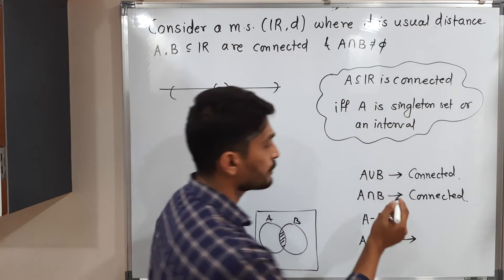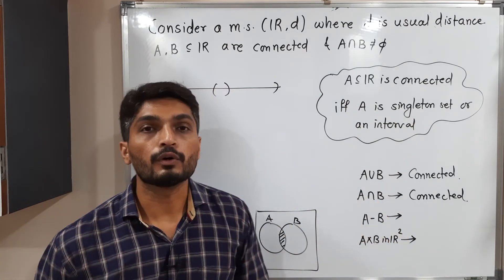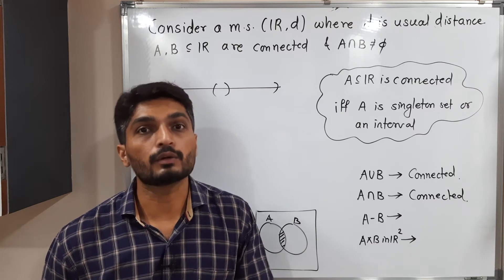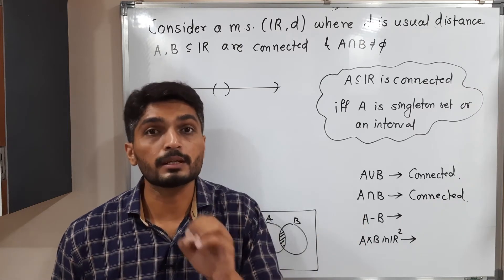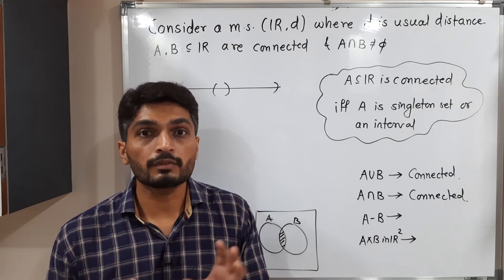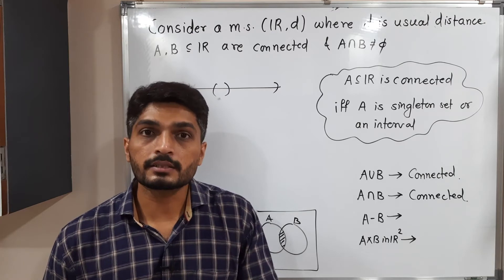In previous videos we have already discussed these two cases. These two are new for us: A minus B and A cross B. A minus B - that means we are removing set B from A. And we have to find whether that resultant set is connected or disconnected. Let us discuss one example.